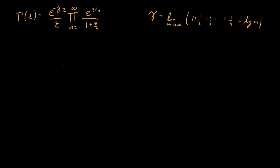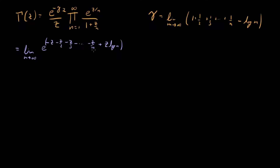The first thing I'm going to do is twofold. I'll first start off by writing the Euler-Mascheroni constant in terms of its limit definition. So that's going to give us the limit as m goes to infinity of e to the minus z minus z over 2 minus z over 3 dot dot dot minus z over m plus z log m, divided by z, times our infinite product.